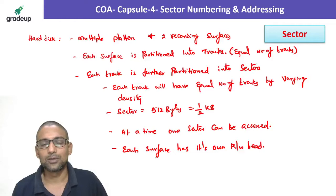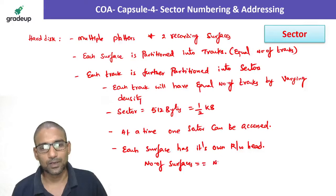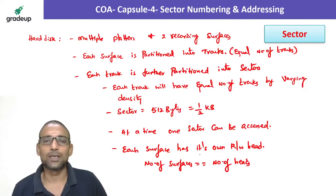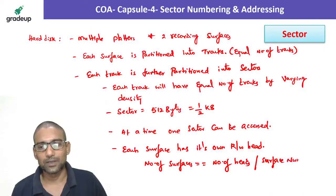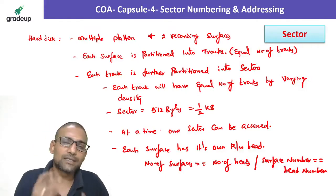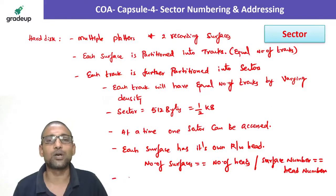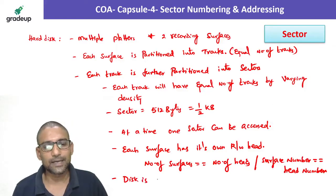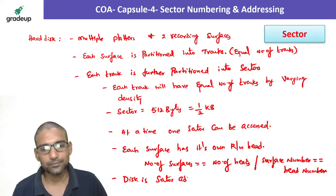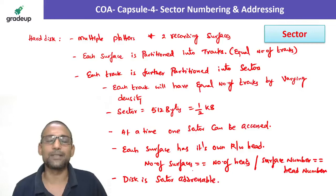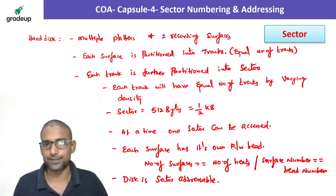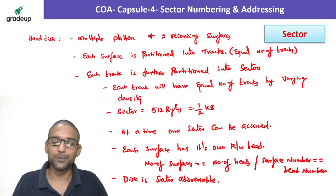Each surface will have its own read-write head. Number of surfaces is equal to number of heads. In the other way, we can also say, surface number is also equal to head number. Why only one sector can be accessed at a time? Because the disk is sector addressable.